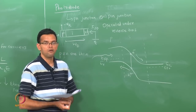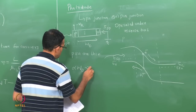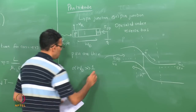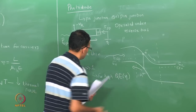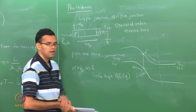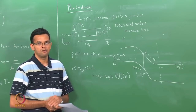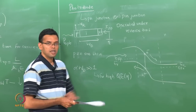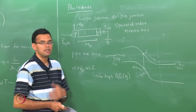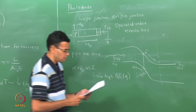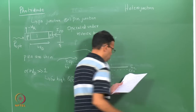For high quantum efficiency we want αW_D >> 1, where alpha is the absorption coefficient and W_D is the width of the intrinsic region. Equivalently, 1/α is the penetration depth, so we want the width of the intrinsic region to be much larger than the penetration depth at the wavelength of interest. Another option is a heterostructure-based heterojunction photo diode, where P, I, and N regions are made of different materials.